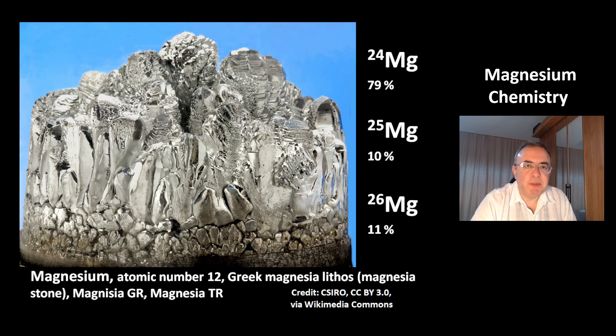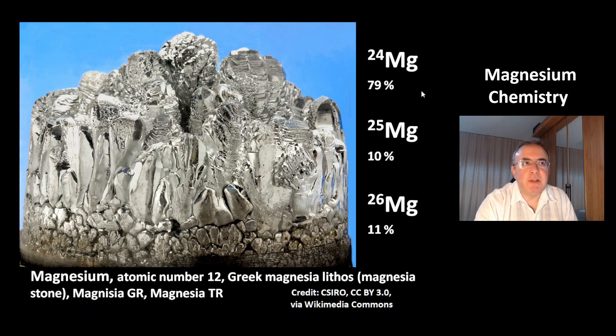Magnesium has atomic number 12. There are three isotopes, and isotope 24 is most common with 79%.